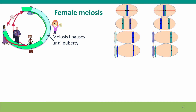Then each menstrual cycle, roughly every 28 days, one oocyte becomes active and finishes meiosis, becoming available for fertilization. This continues — usually only one oocyte each month — until the woman reaches menopause at about age 50, when the whole production of female gametes stops. So that's very different from what happens in males.